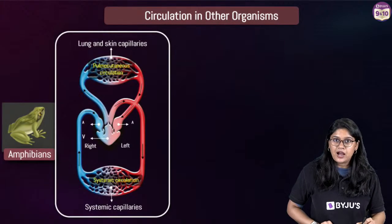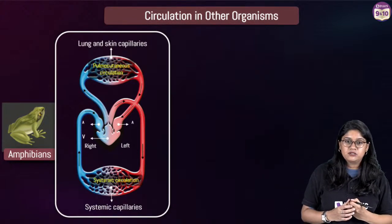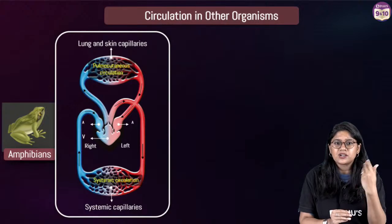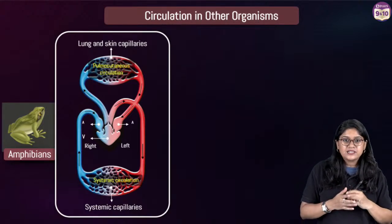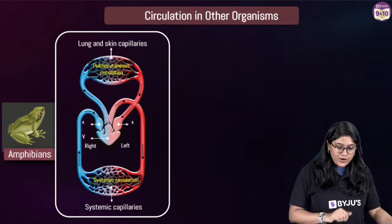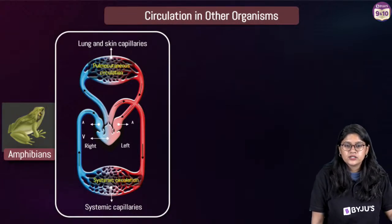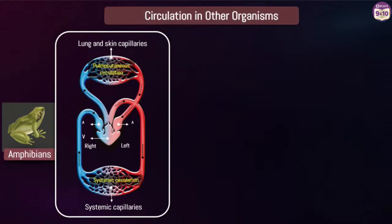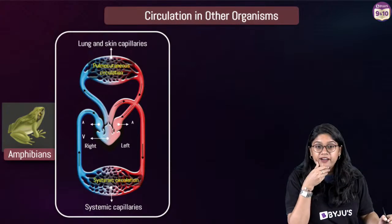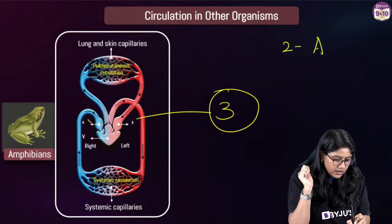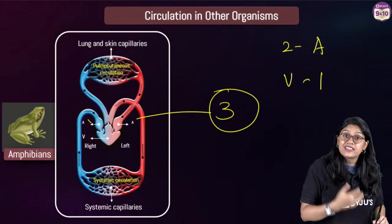In amphibians, which have three-chambered hearts, they have two atriums and one ventricle. There is a mixing of the blood in the ventricle. They do have double circulation, as you can see from the diagram. Lungs and skin capillaries send blood towards the heart, then from heart to the body, and again coming back.